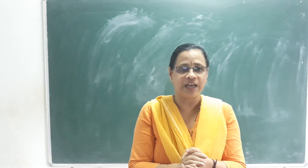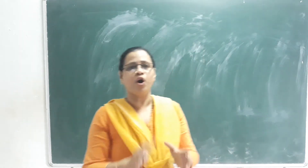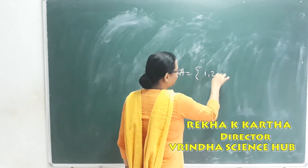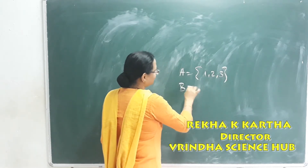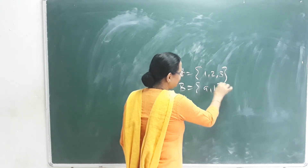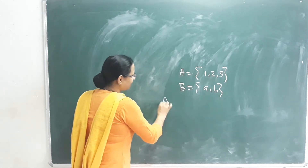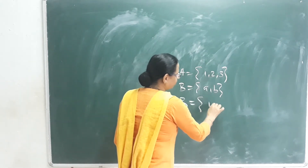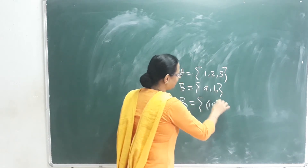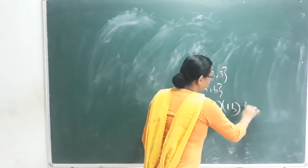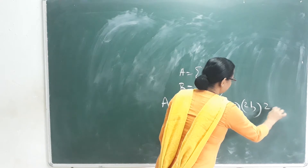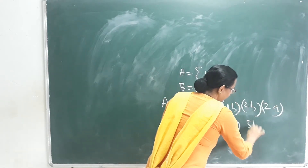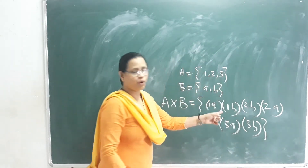Let's start with the Cartesian product. In a non-empty set, A is equal to {1, 2, 3} and B is equal to {a, b}. These are two sets. A cross B is equal to {(a,1), (a,2), (a,3), (b,1), (b,2), (b,3)}. This is the Cartesian product.